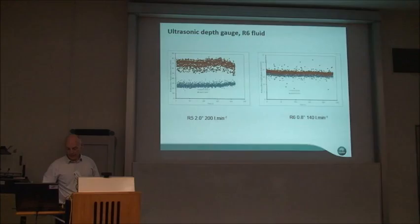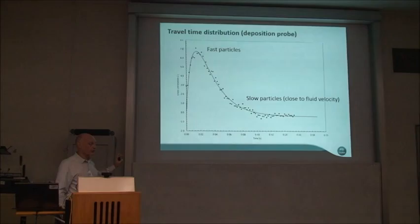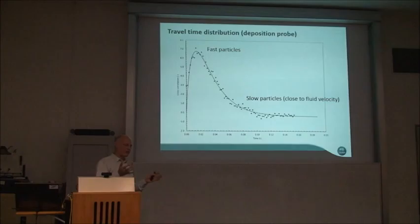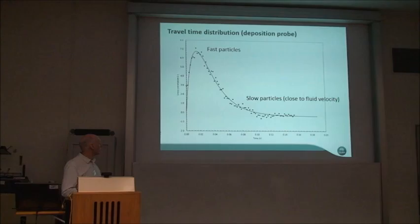From the depth data, and looking at the output from deposition probes — we have two probes and can get a cross-correlation of where particles are passing through, giving a velocity distribution of particles very close to the wall. When there's no deposition we get a fuzzy signal; when particles start consistently moving past the electrodes close to the wall, we get a coherent signal which we can interpret as a velocity of particles in the bed.